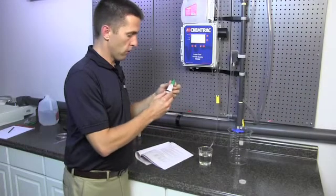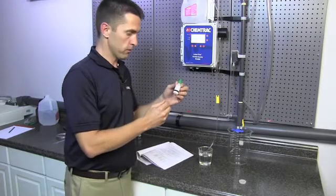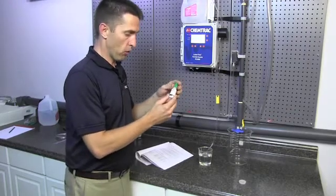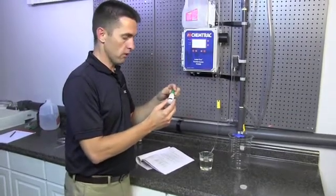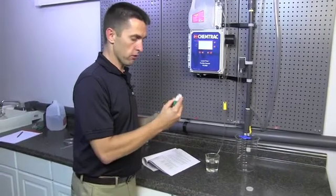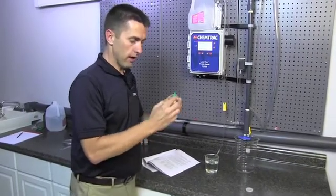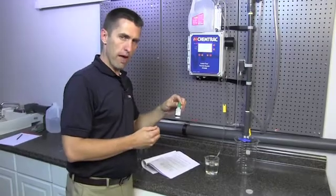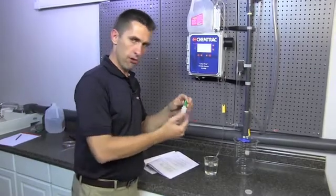So we're going to take our 2 micron PSL spheres. And the first thing that we need to do before we pipette this into the jug is we need to gently stir the jugs for a bit of time.